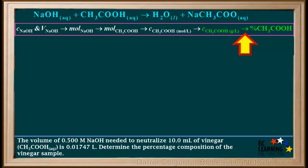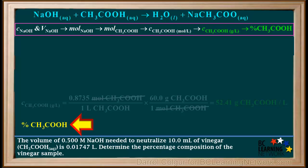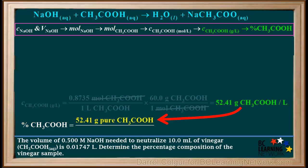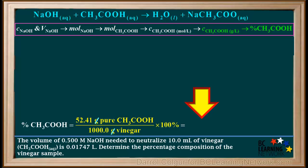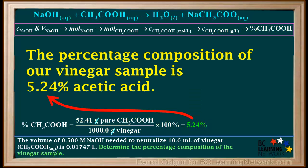The last step is to use the mass of pure CH3COOH in one liter of vinegar and the mass of one liter of vinegar to find the percent composition. To find the percentage of pure acetic acid in vinegar, we'll assume the density of vinegar is 1 gram per milliliter or 1000 grams per liter. The mass of pure acetic acid in one liter is 52.41 grams, and the total mass of one liter of vinegar is 1000 grams. So the percentage composition is 52.41 grams over 1000 grams times 100%, which gives us 5.24%. This is rounded to three significant figures to be consistent with the given data. The percentage composition of our vinegar sample is 5.24% acetic acid.